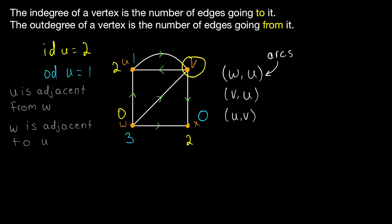What is the in-degree of V? Well, that would be two. There are two arcs going to V. So the in-degree is two. The out-degree of V is also two, because there are two arcs going out of V.